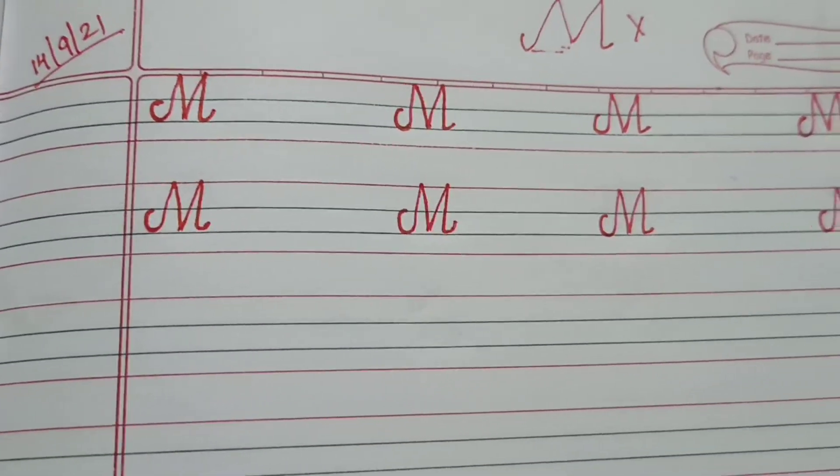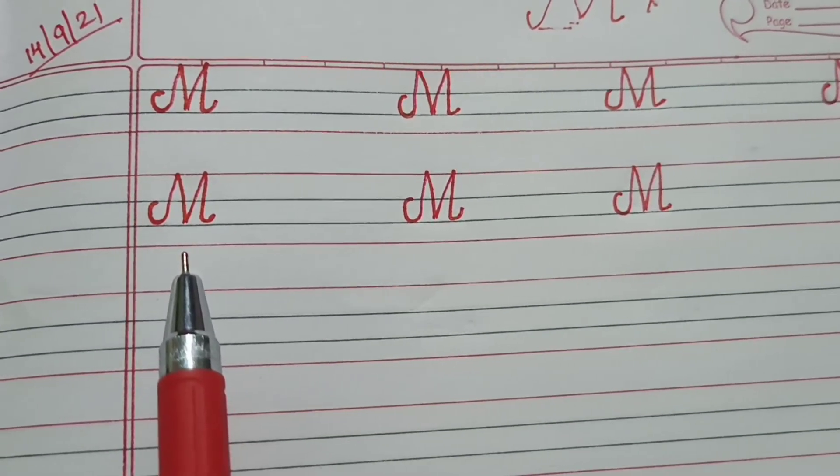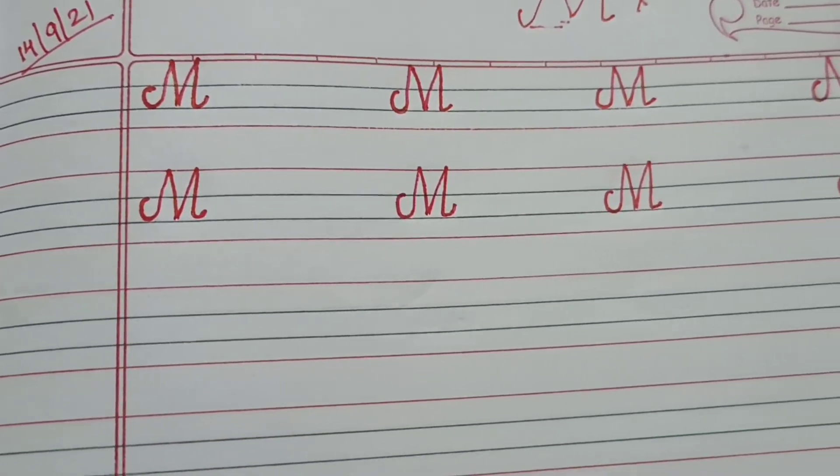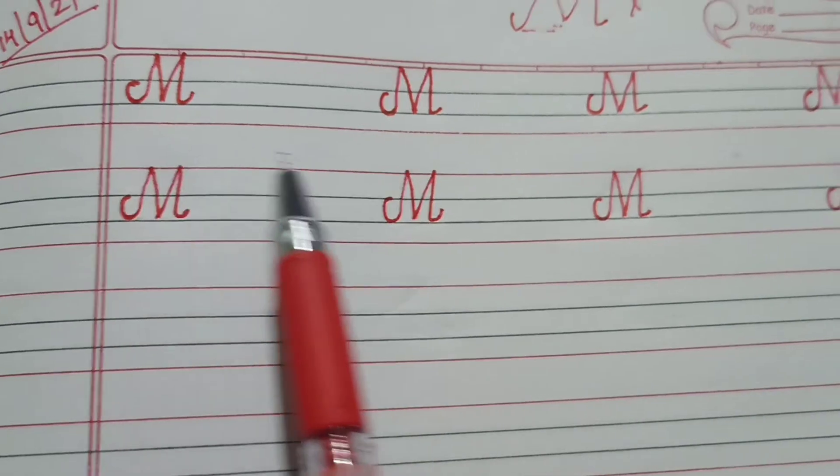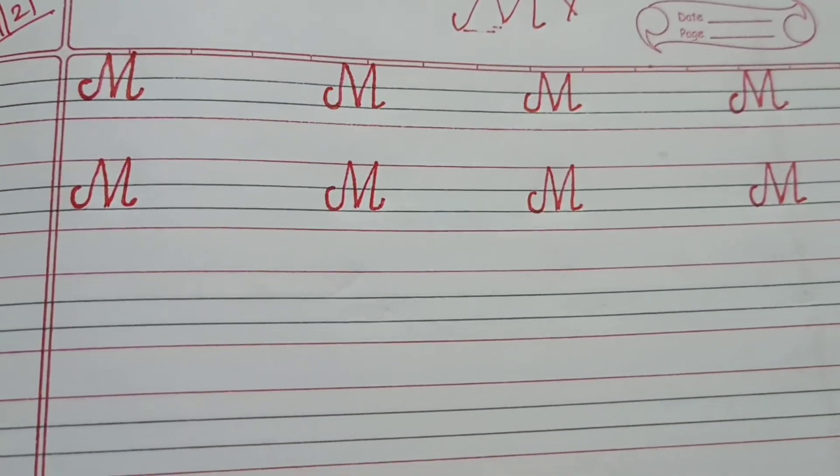So, now today we are going to write two alphabet. That is M and N. So, now you have understood how to write M. So, this you need to write full page. Okay. Now, let us write N.